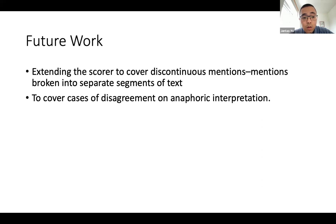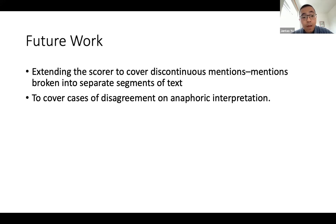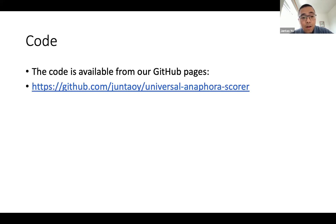In terms of future work, we are working in two directions. First, we are trying to extend the scorer to cover discontinued mentions — mentions formed by separate segments of text. Another goal is to find a way to score corpora with disagreement annotations, which is quite common in dialogue and other corpora such as the Phrase Detectives corpus. You can find all the code on our GitHub page using the link below. Thanks for listening.